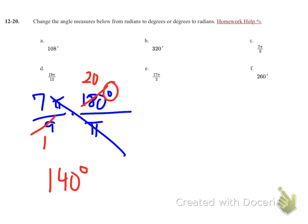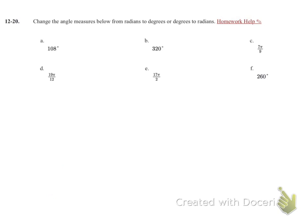Let's take a look at problem D. 19 pi over 12. So again, I'm going to put the pi in the denominator to make a giant one, and my 180 in the numerator. So 12 and 180, I can reduce that. I know that I can divide them both by at least 4. I'll put a 3 down here.